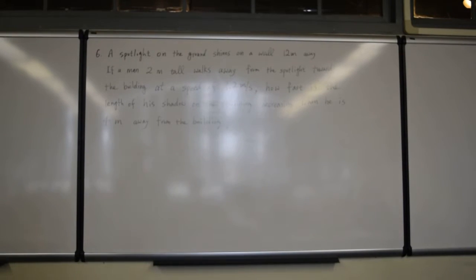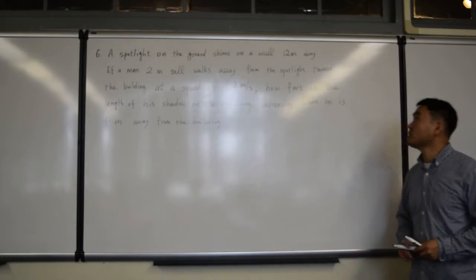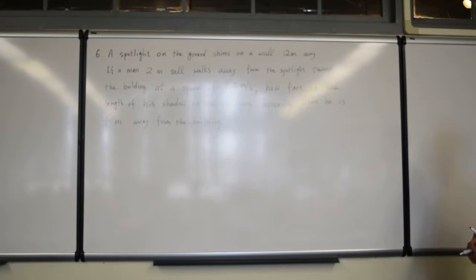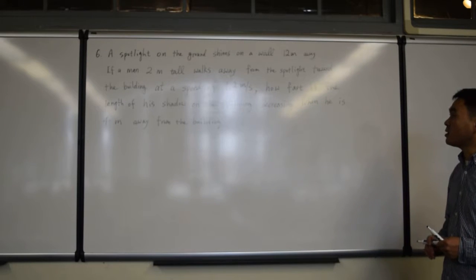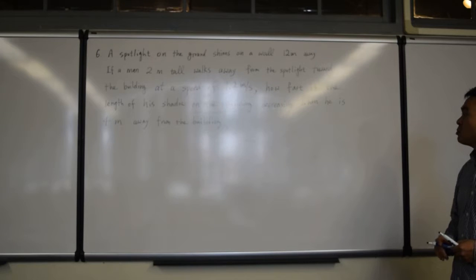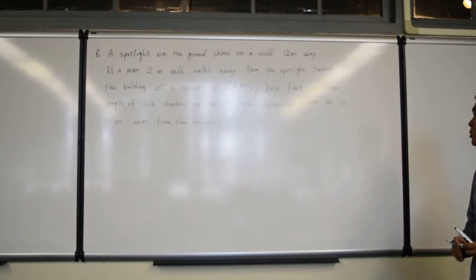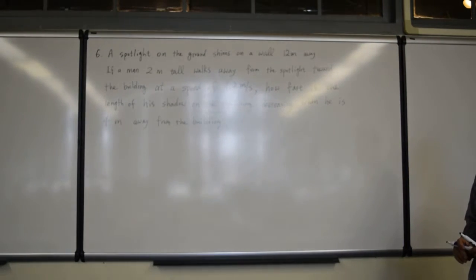Okay, let's try it together. The spotlight on the ground shines on a wall 12 meters away. If a 2 meters tall man walks away from the spotlight toward the building at a speed of 1.2 meters per second, how fast is the length of the shadow on the building decreasing when he is 4 meters away from the building?